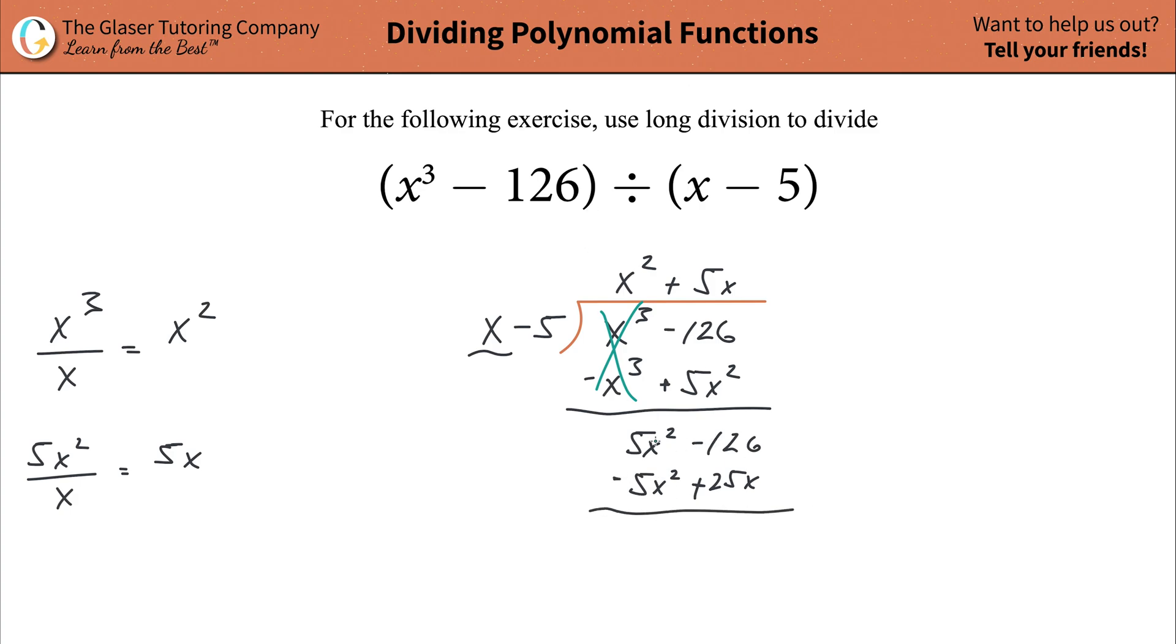So now all you got to do is just simply add these together. They are going to annihilate one another. And then you add these two together, but you can't really do it because they're not like bases. So that's okay. Just rewrite it. 25x minus then 126. So guess what? This is now your new dividend.